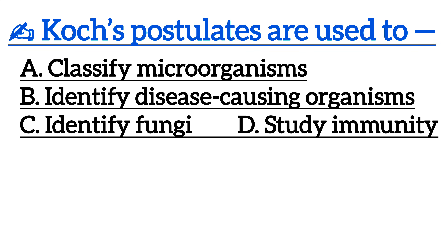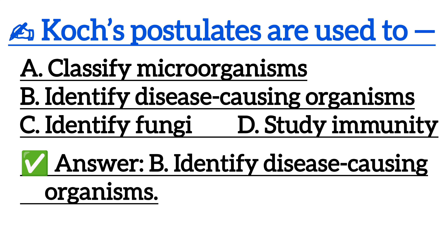Next one is: Whose postulates are used to — Option A: Classify microorganisms, Option B: Identify disease-causing organisms, Option C: Identify fungi, Option D: Study immunity. Correct answer is Option B: Identify disease-causing organisms.